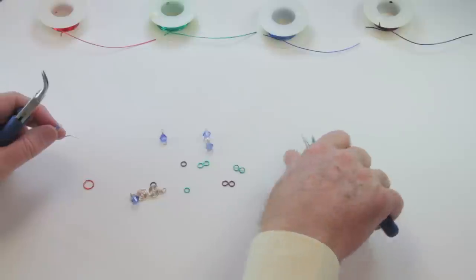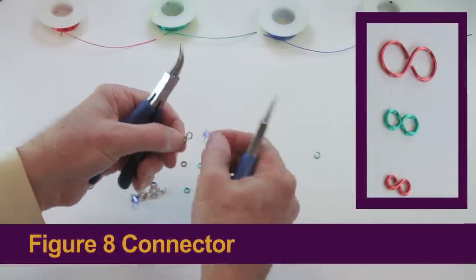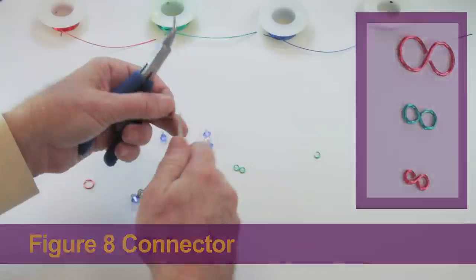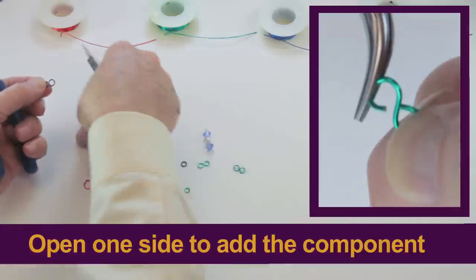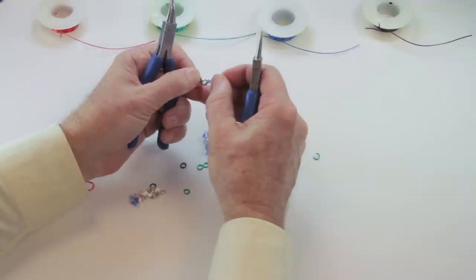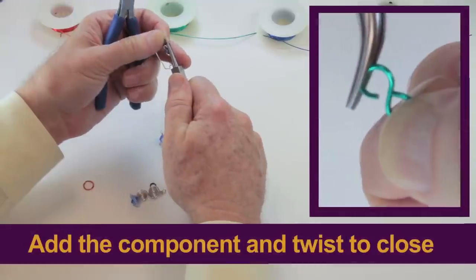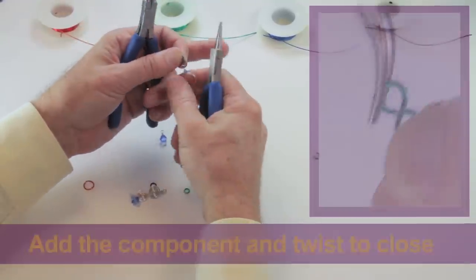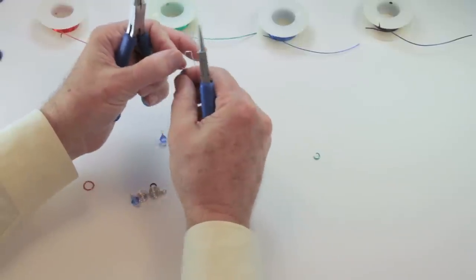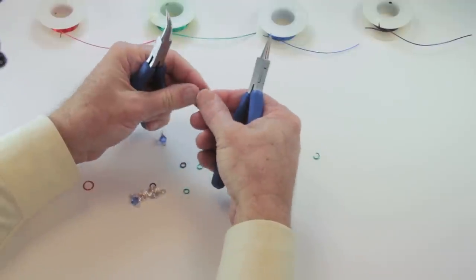You would have to add another jump ring like this other option that you're going to show. And the other option is a component that we call a figure eight connector. So I can take a figure eight connector and I'm going to open one side. And these are ones that you've personally made that you're going to demonstrate in another video. In another video, we'll show how to make jump rings. So now I've connected the figure eight connector to the ear wire.